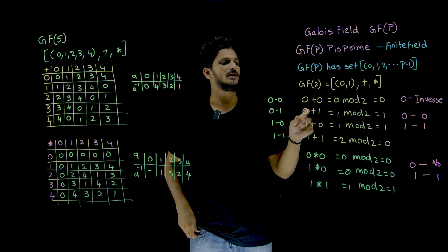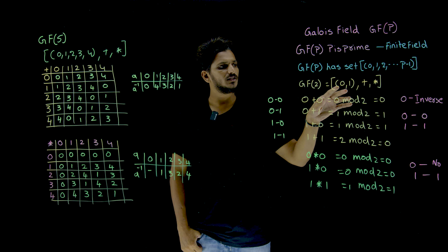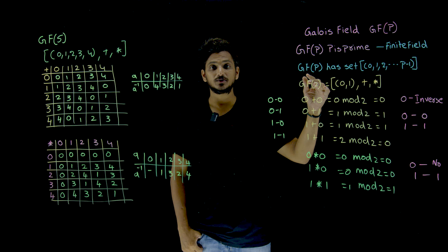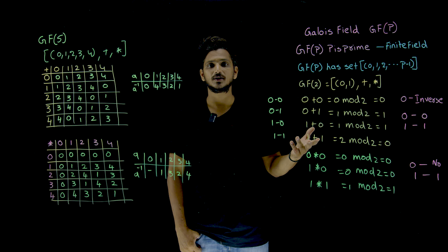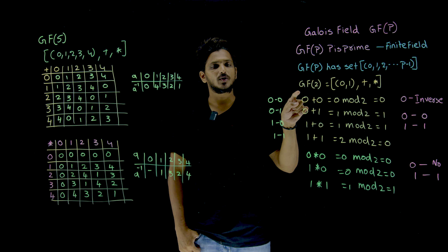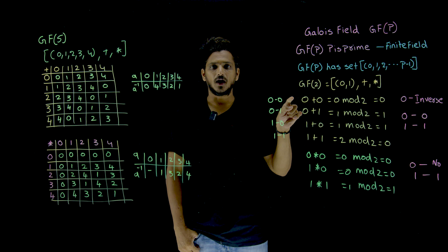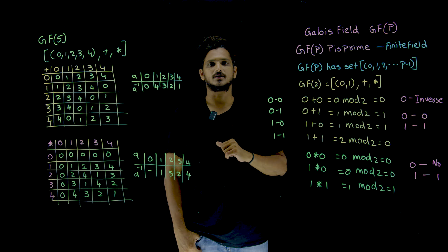Here, a field must satisfy all five properties. What are those properties? Closure property, associative, commutative, identity element, and inverse.